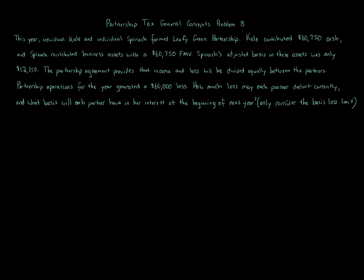Partnership tax general concepts, problem eight. This year, individual Kale and individual Spinach formed Leafy Green Partnership. Kale contributed $60,750 cash and Spinach contributed business assets with a $60,750 fair market value, but Spinach's adjusted basis in these assets was only $12,150. The partnership agreement provides that income and loss will be divided equally between the partners. Partnership operations for the year generated a $60,000 loss. How much loss may each partner deduct currently, and what basis will each partner have in her interest at the beginning of next year?